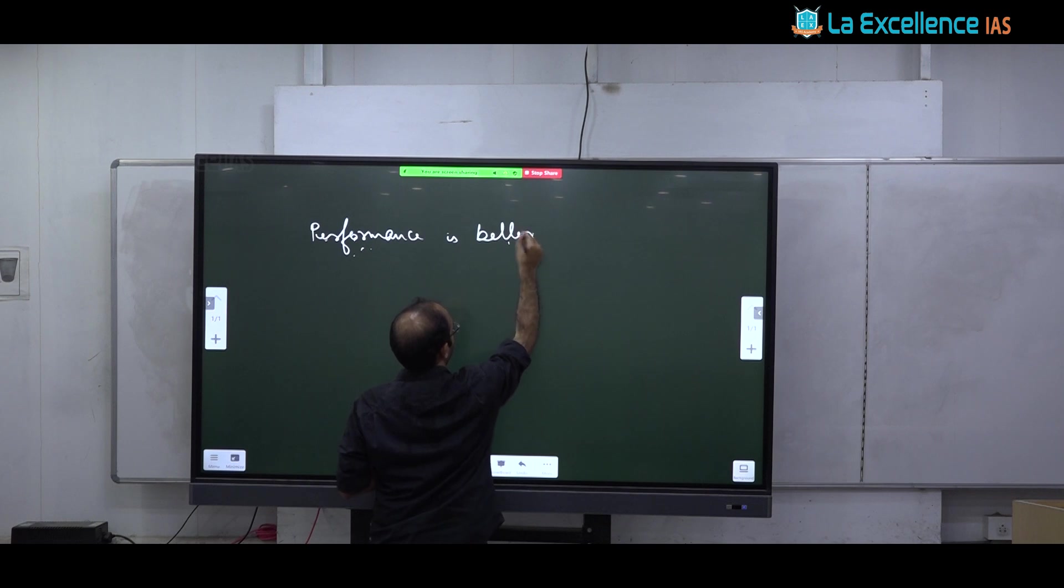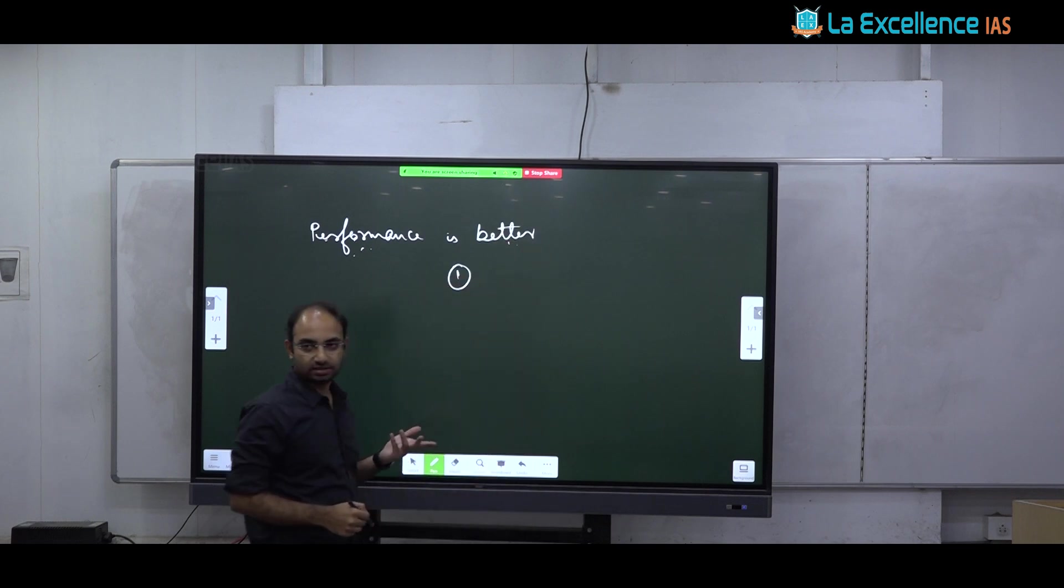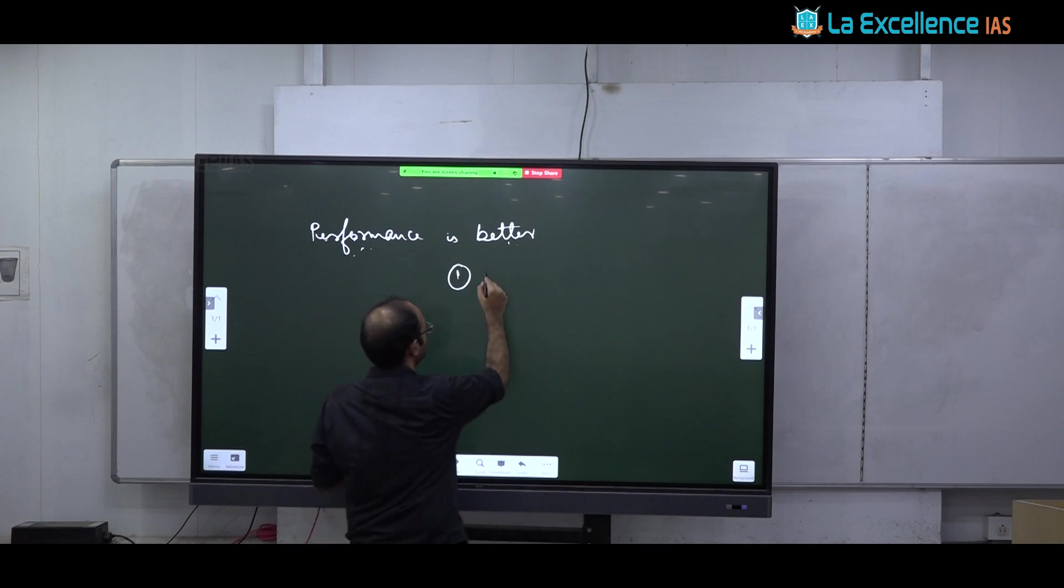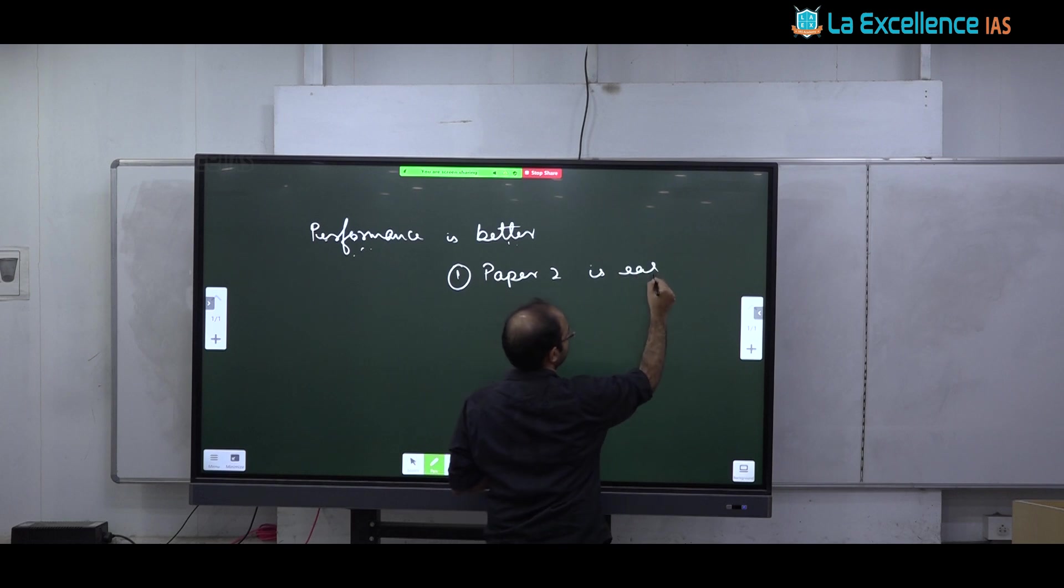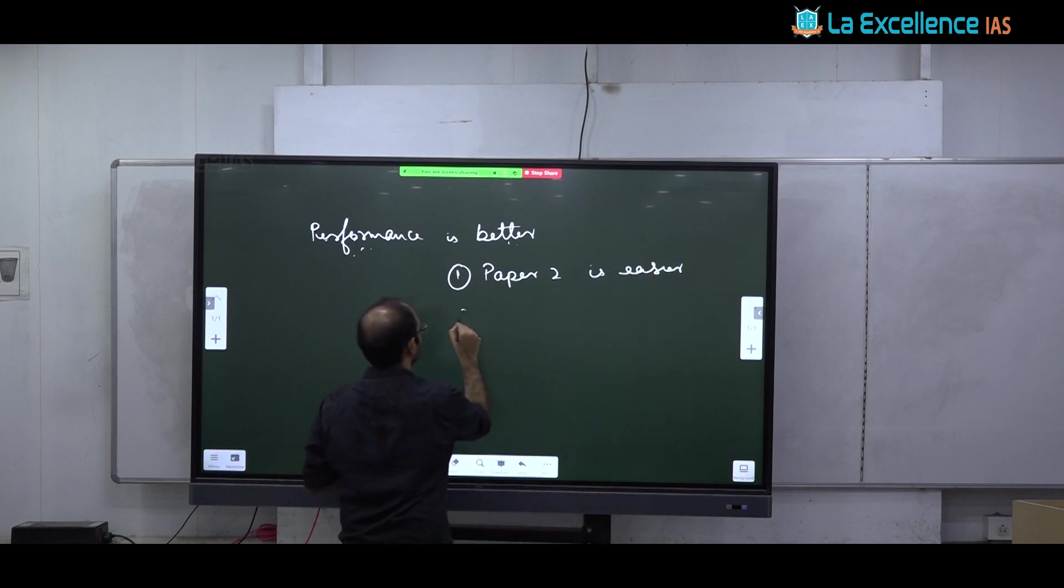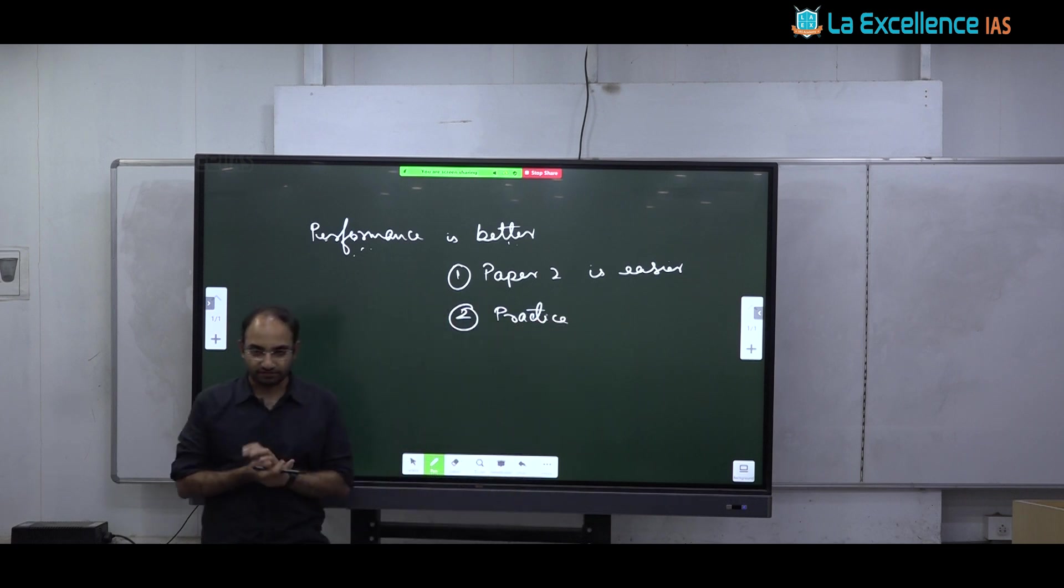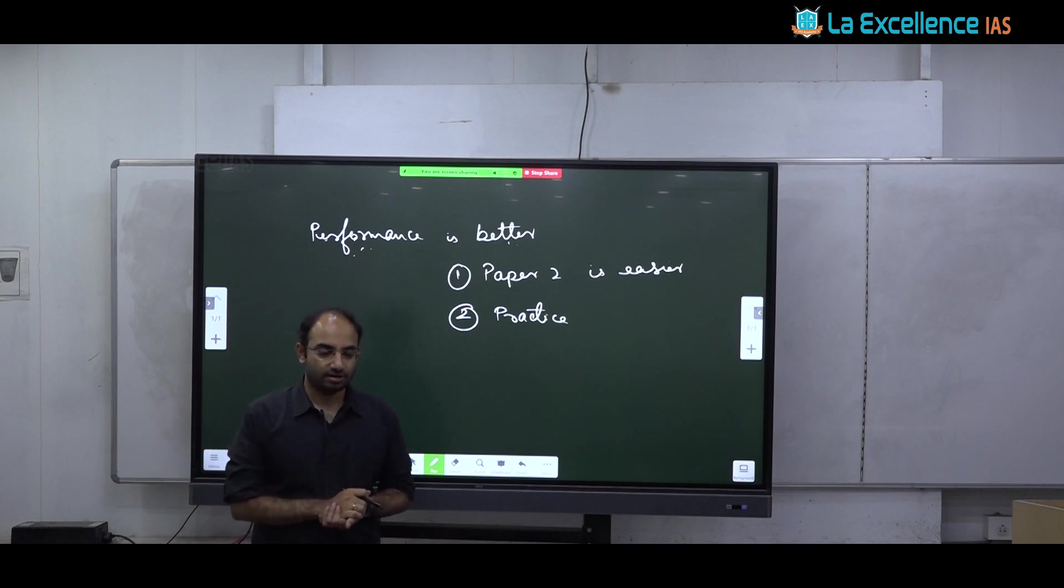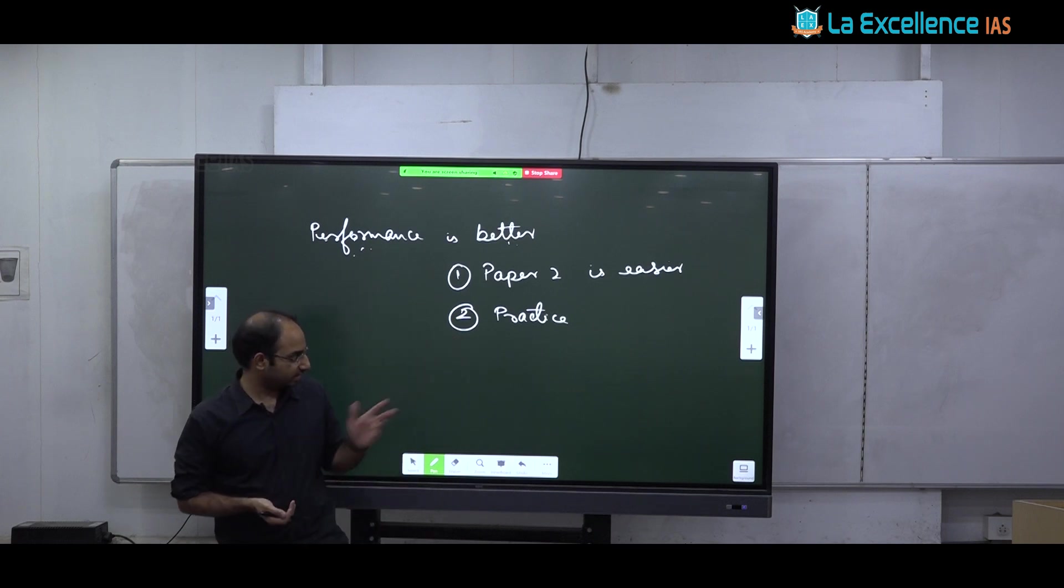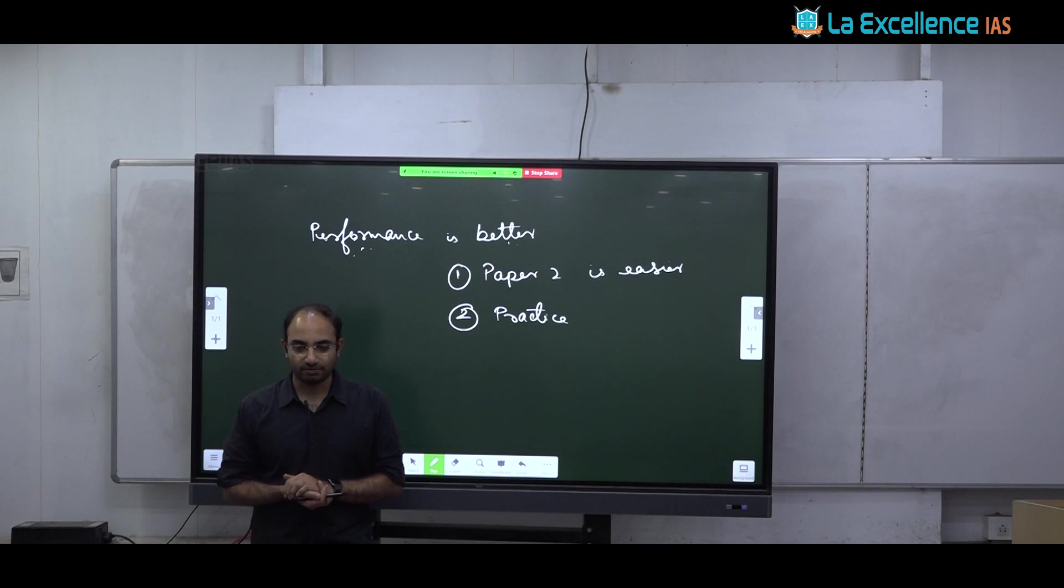This could be because of two reasons. One first is the fact that paper 2 is an easier paper to handle than paper 1. Second is practice. I think in the first test, all of you had just a test and throw after a long break. After the prelims you had long break, preparing for prelims and suddenly test optional after a long time. So you will be rusty.